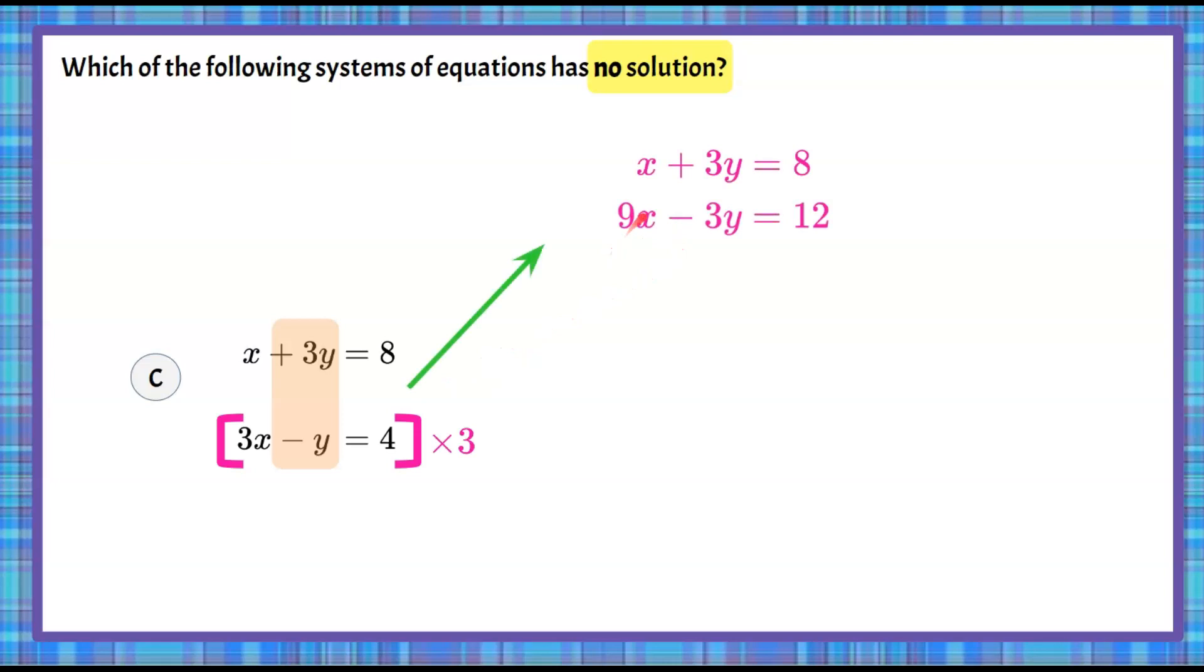Keeping our first equation, multiply 3x by 3 for 9x, 3 times negative y for negative 3y, and 3 times 4 is 12. And now we can go ahead and add, because I have my opposite coefficients here, giving me a zero pair. x plus 9x is 10x, and 8 plus 12 is 20.